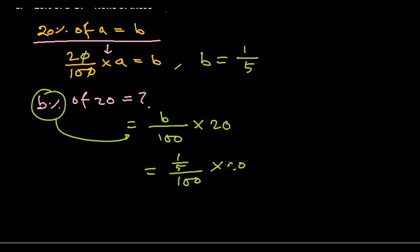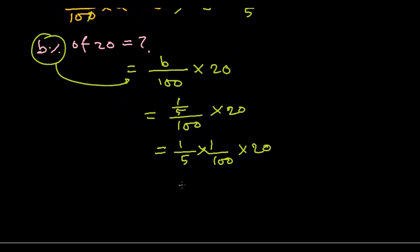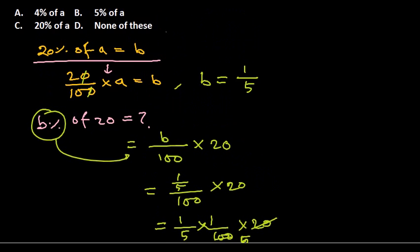So you can write 1 by 5 instead of B by 100 into 20. Simply we can write 1 by 5 into 1 by 100 also into 20. So if this is the case, then 1 by 25, right? So here we get 1 by 25.